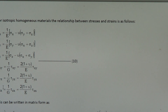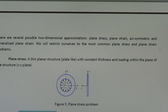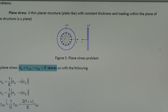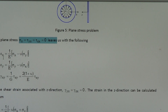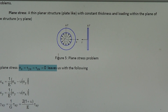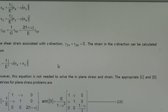If you put these conditions — sigma_z = 0, tau_yz = 0, tau_zx = 0 — into the equations, you can actually reduce the total number of strain components to 3. So we have only the planar problem: normal strain in x, normal strain in y, and shear strain in the xy plane. These are the three strain components we need for a plane stress problem.